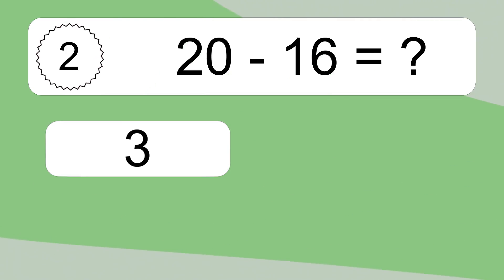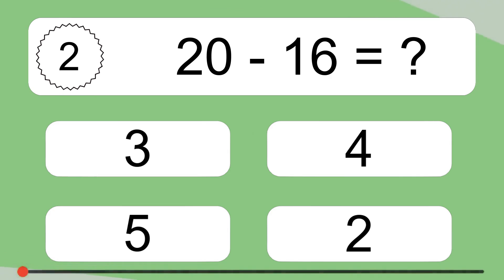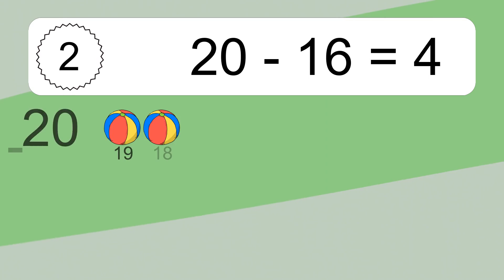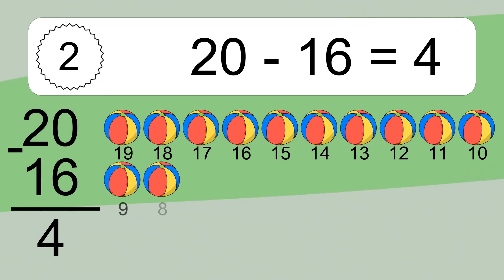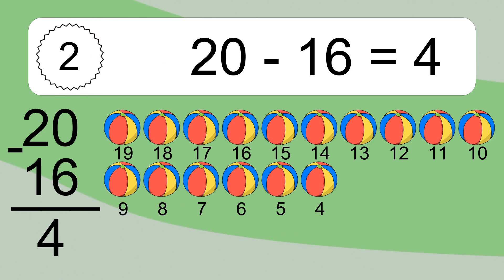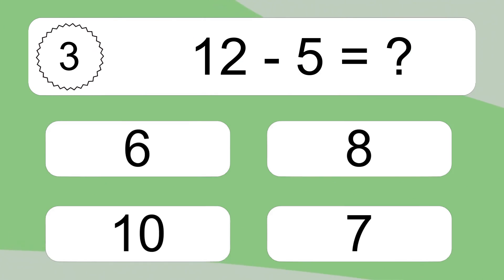20 minus 16 equals what? 20 minus 16 equals 4. Let's count it: 19, 18, 17, 16, 15, 14, 13, 12, 11, 10, 9, 8, 7, 6, 5, 4.